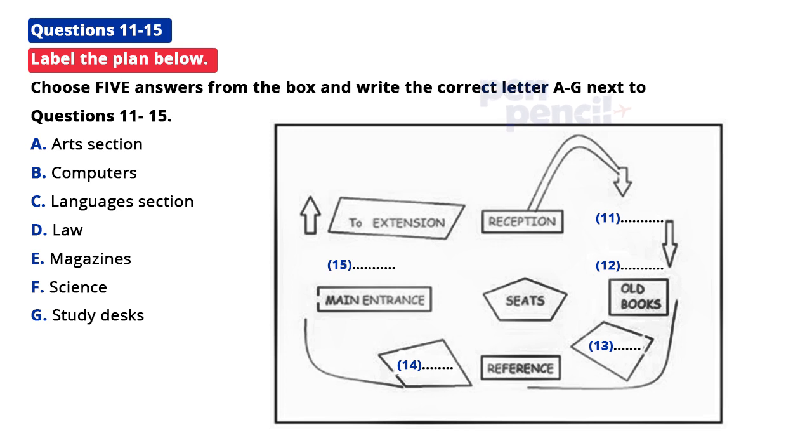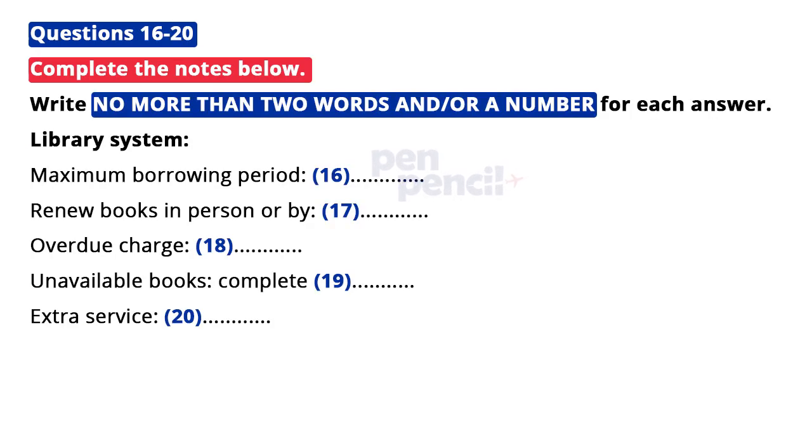OK, then. We're back at the main entrance. Over there, by reception, there's a door that goes to the extension. And we have further sections, such as languages and study desks, through there. So, you could have a look round when we've finished. Then, just between reception and the door here, is where we decided to put the computers. But the computer magazines are in the magazine section, as we found too many went missing here. OK. Is that everything?